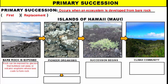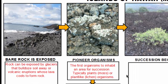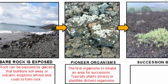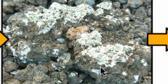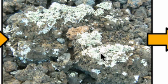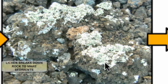Once we have bare rock exposed, how does life start from it? Nature finds a way using pioneer organisms or pioneer species. The first organisms to inhabit an area are typically plants such as moss and lichen. Lichen can grow on bare rock because it is a combination of two organisms — fungus and algae. The algae gives lichen its green color and photosynthesizes sunlight to produce food for the fungus. The fungus grows on the rock, and the lichen secretes enzymes that help break down the rock so it can absorb minerals its cells can use.